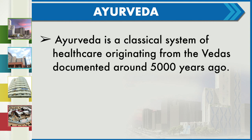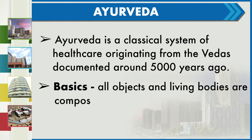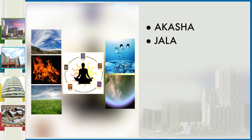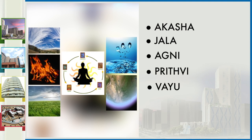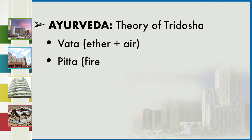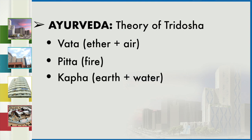Ayurveda is the classical system of health care originating from the Vedas, documented around 5000 years ago. The basics of Ayurveda state that all objects and living bodies are composed of five basic elements called the Panch Bhutas: Akasha, Jal, Agni, Prithvi and Vayu. Ayurveda's theory of Tridosha includes Vata (Ether plus Air), Pitta (Fire), and Kapha (Earth and Water).